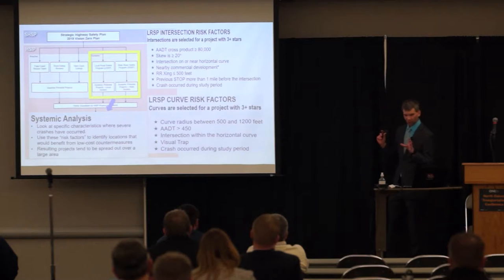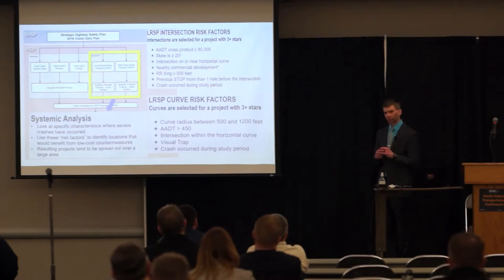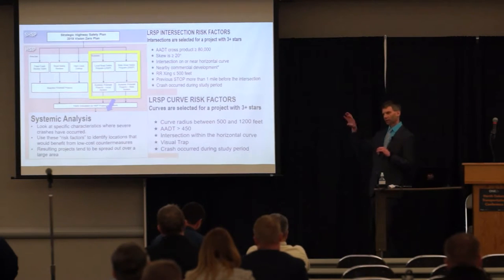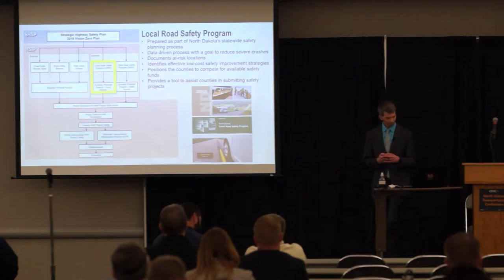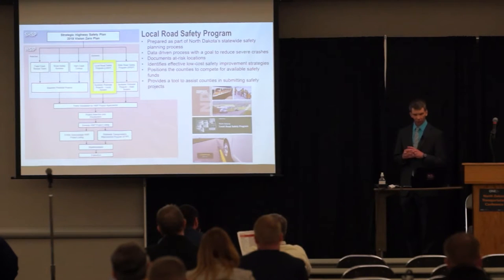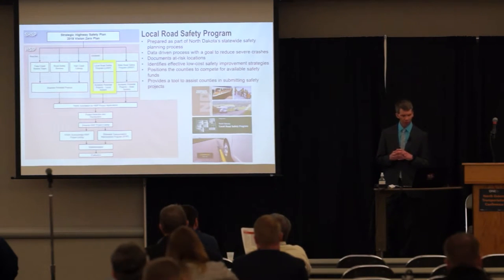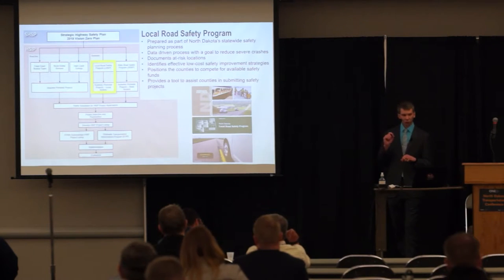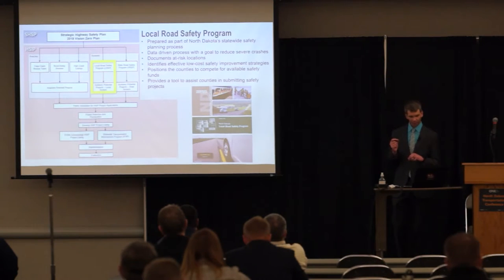On that side, we have the local road safety plan. We also did this on our state system — the state road safety plan — completed a few years ago for safety improvement projects, taken district by district across all eight of our DOT districts. We did the local road safety plans in 2013 and 2015 as a data-driven process with the goal to reduce severe and fatal crashes. It documented at-risk locations and identified low-cost safety improvement strategies.